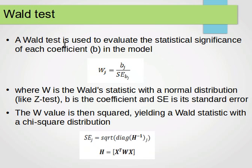The Wald test is used to evaluate the statistical significance of each coefficient in the model. So now we are assessing the predictor contribution. wj equals bj over SE of bj, where w now is the Wald statistic with a normal distribution, maybe a little similar to the z-test. Again, I explain what the z-test and the t-test is in my tutorial for Data Exploration and Analysis. b now is the coefficient and SE is the standard error. The w-value is then squared, yielding a Wald statistic with a chi-squared distribution and we get that. So we just square that and we get that value.